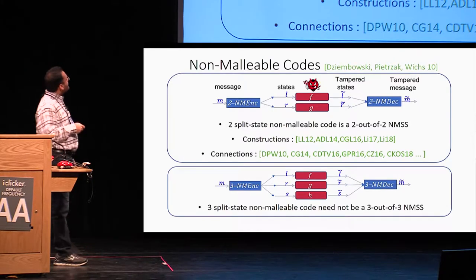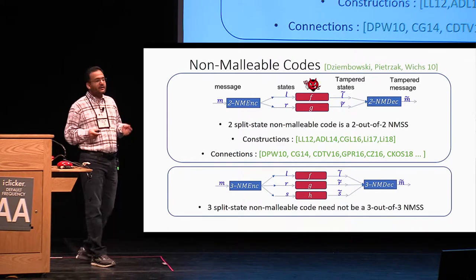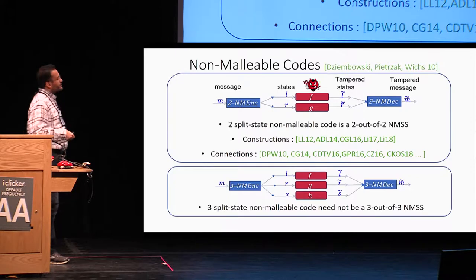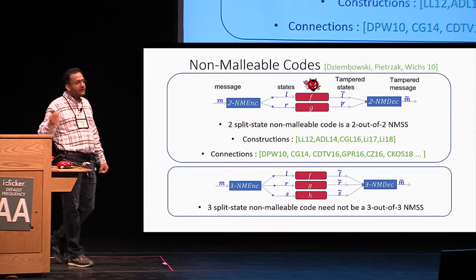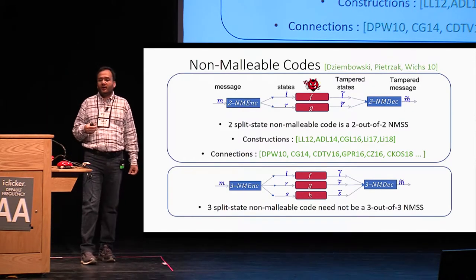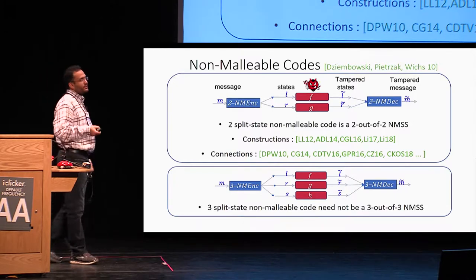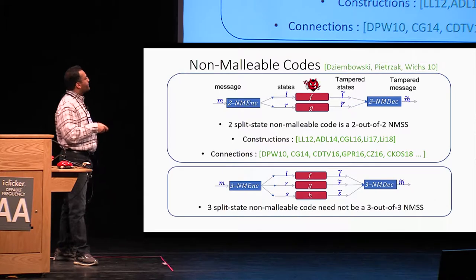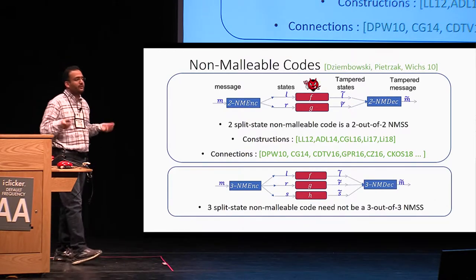Constructing non-malleable codes in the split-state model proved to be surprisingly hard, with a number of works in the literature. First, a construction was proposed in the computational setting assuming a trusted setup. Then an unconditional construction was proposed for a single-bit message, which was generalized to arbitrary-length messages. Since then, a number of works have studied stronger properties and the rate of these codes.